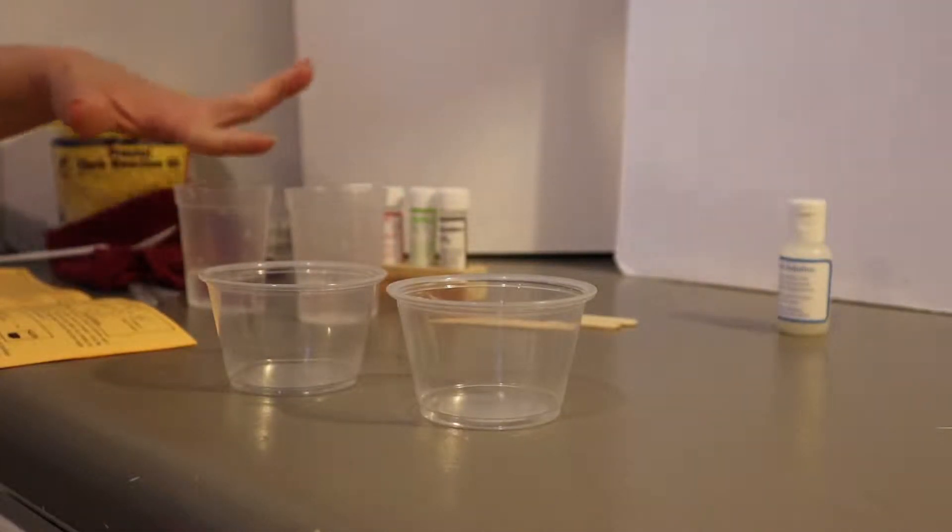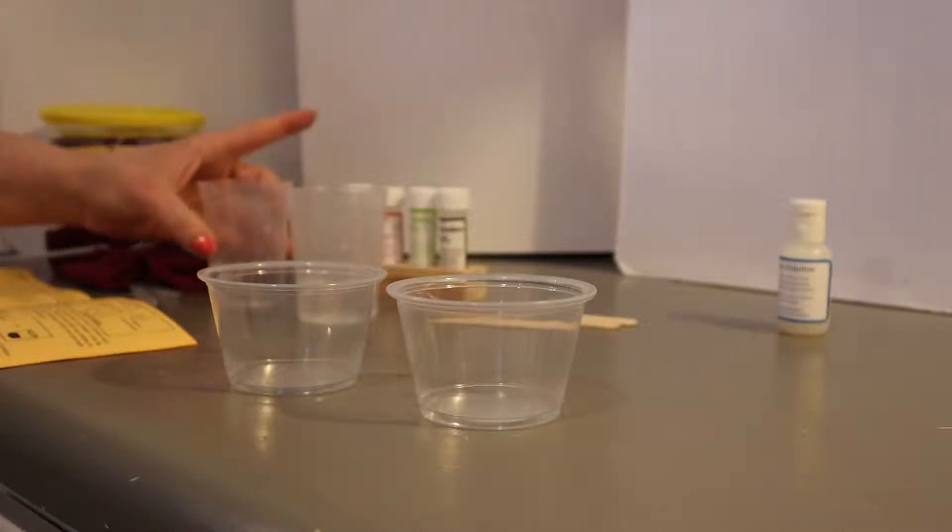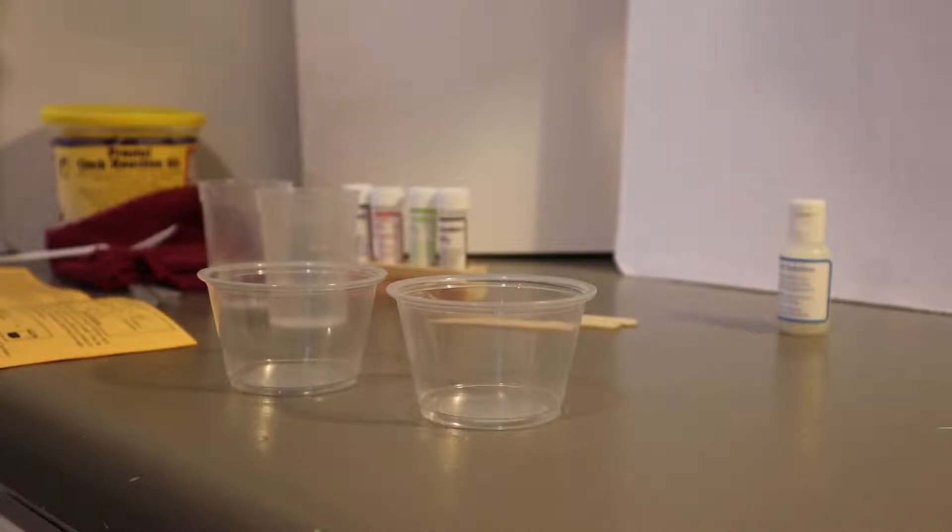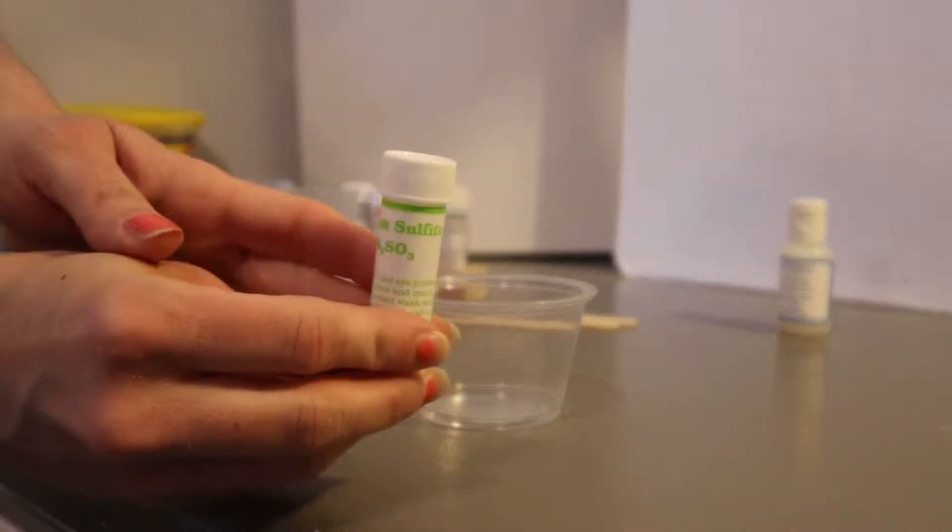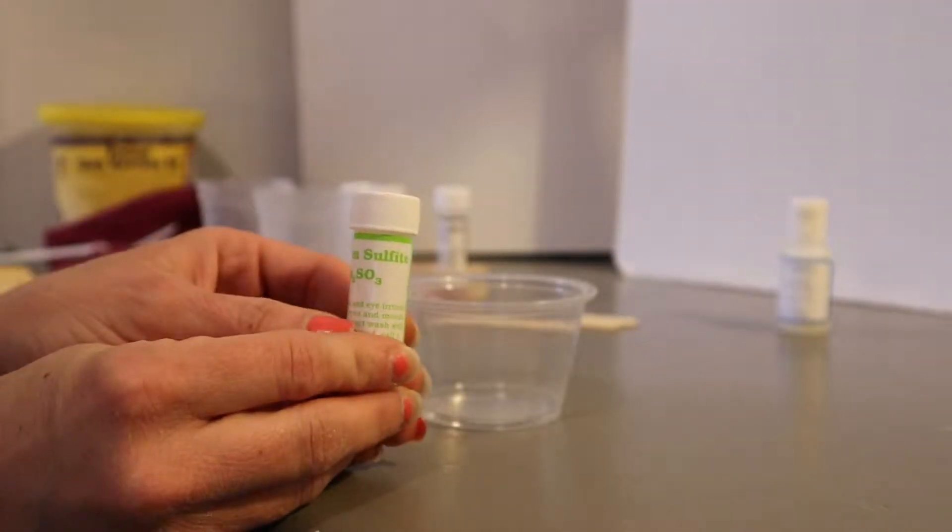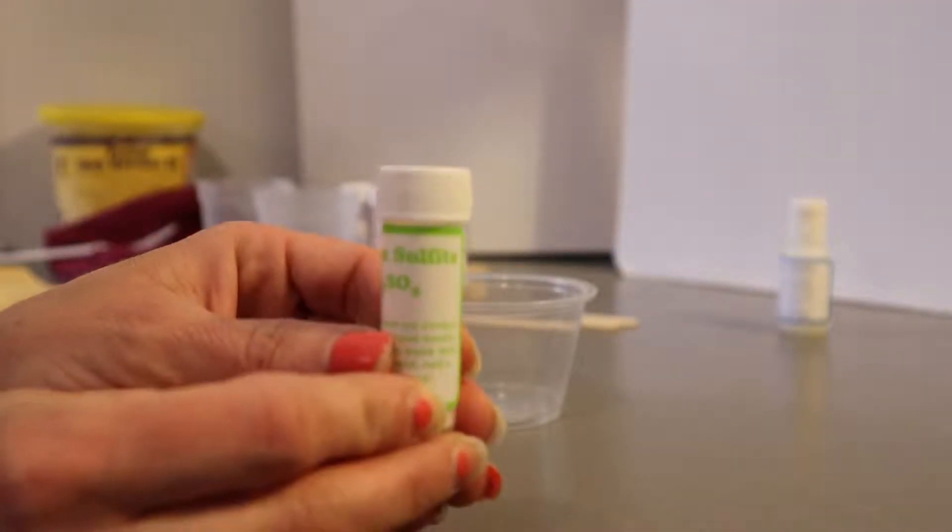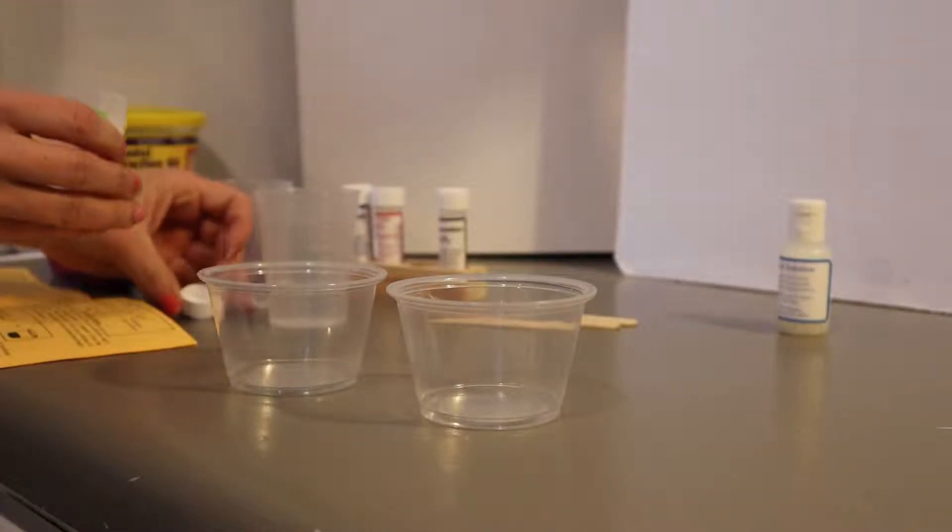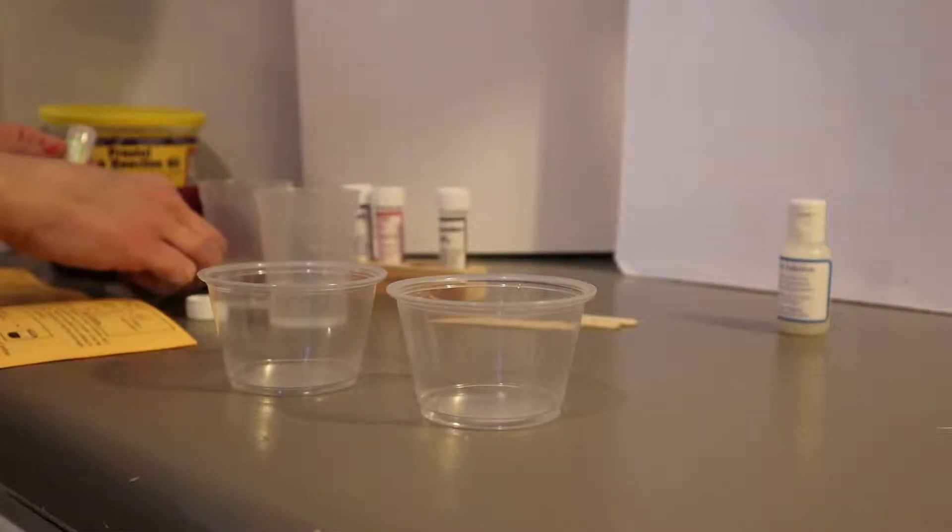So this is Clock A. That's going to be the first one. This will be Clock B. Now Clock B, I have to add a half of a scoop of sodium sulfite. Sodium sulfite.